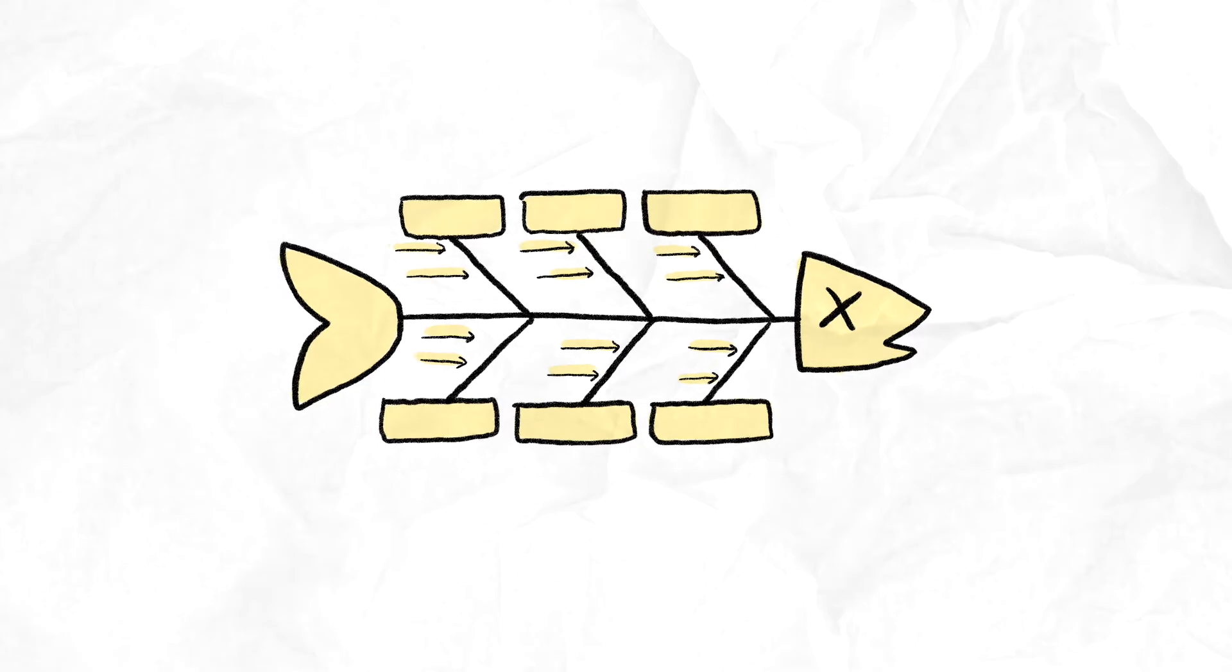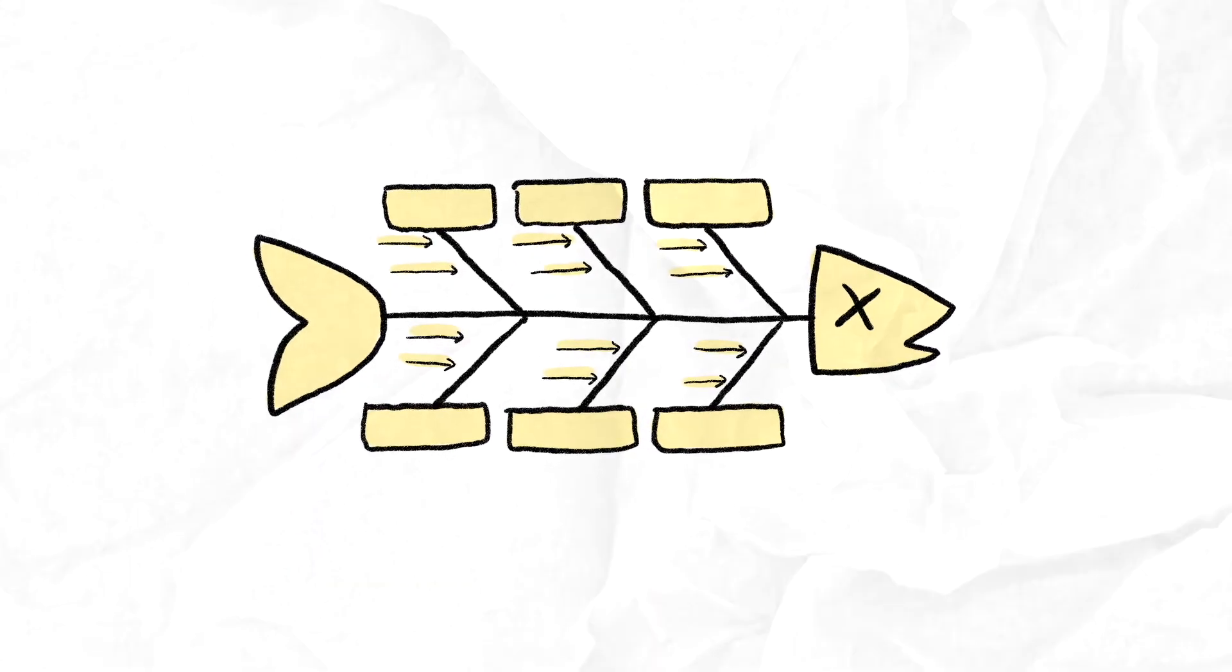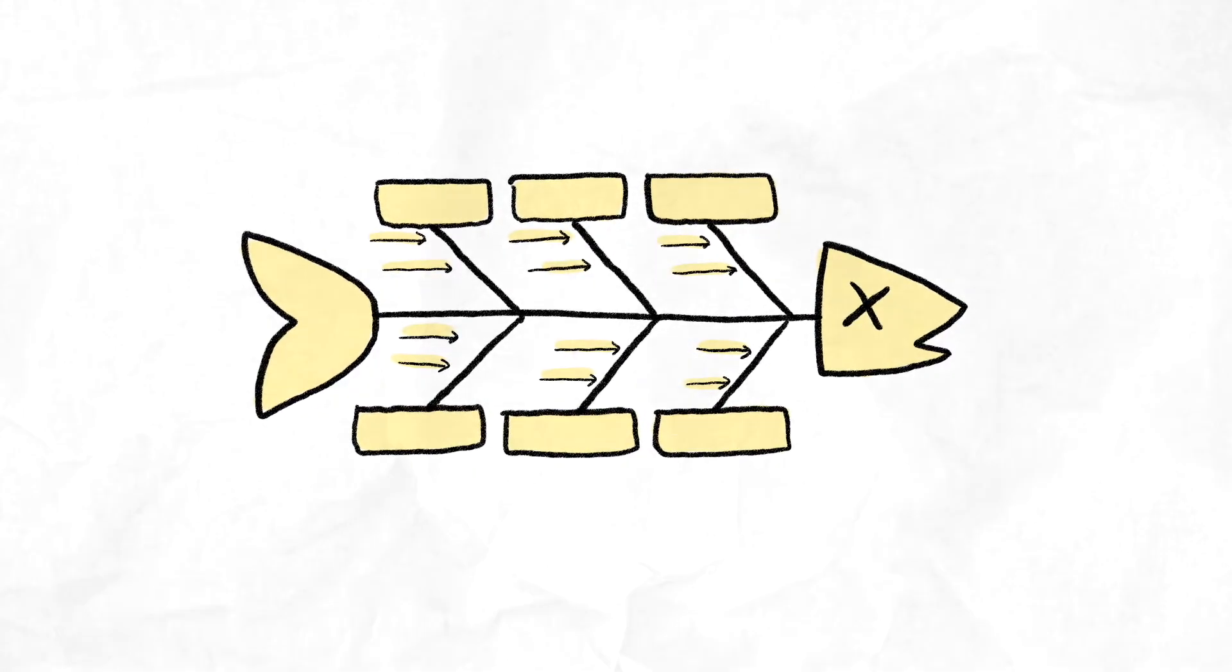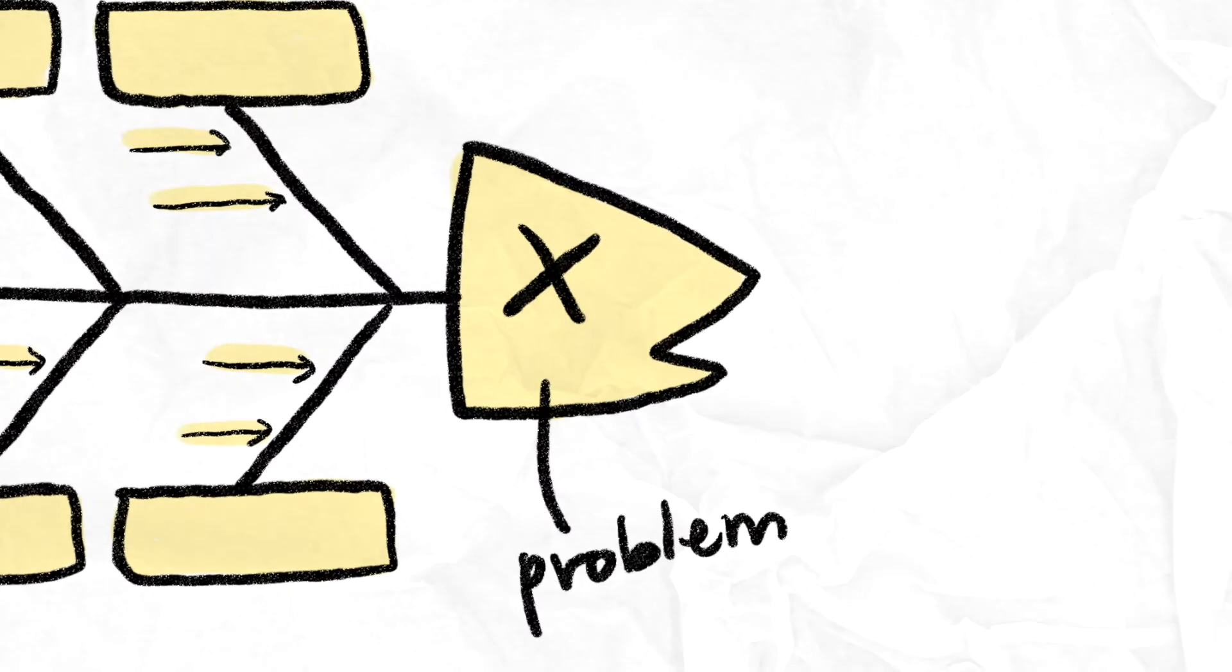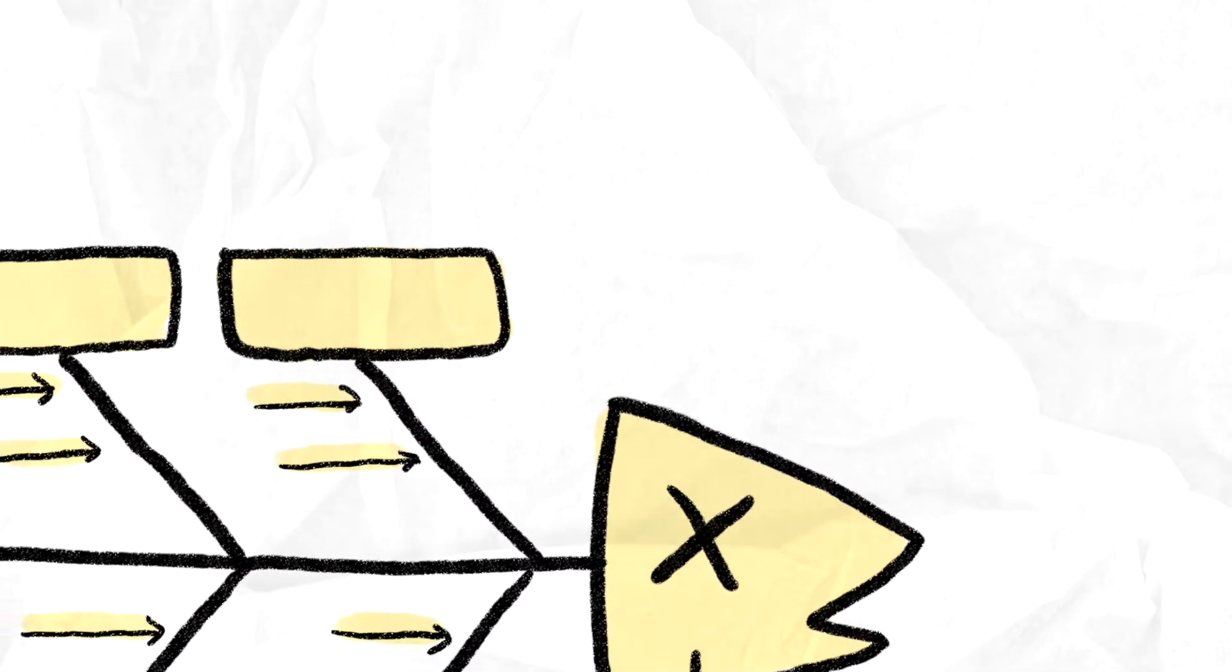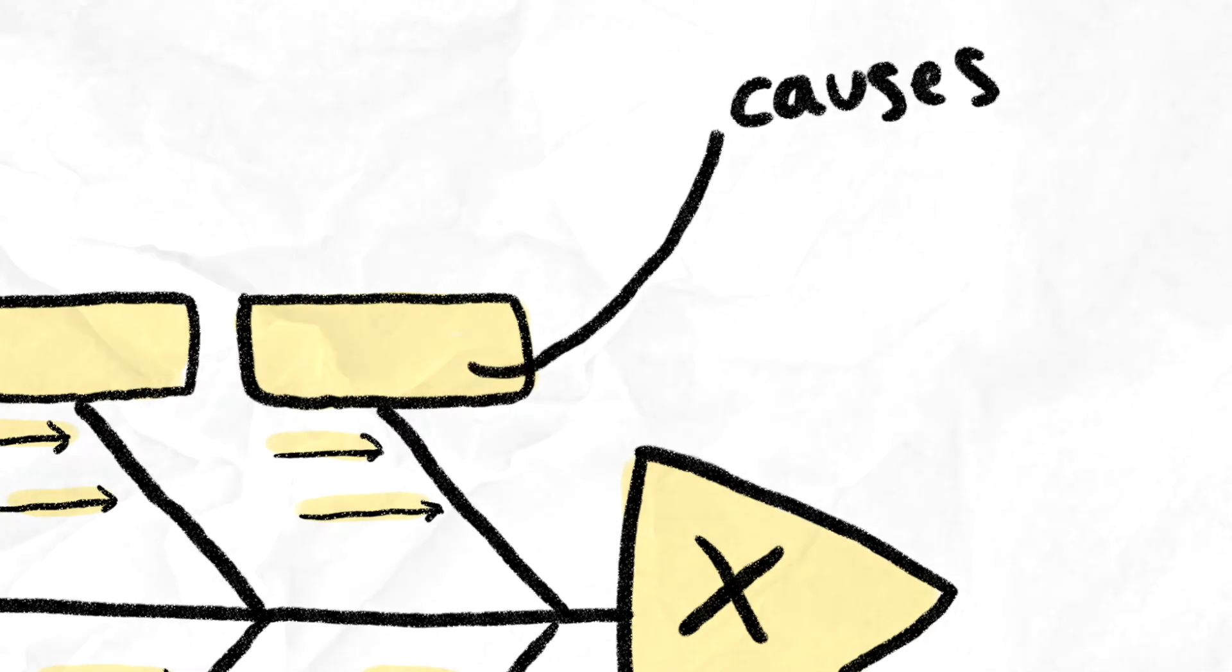A fishbone diagram can help your team to aggregate your understanding of a problem into a coherent visual. In a fishbone diagram, the problem is at the head and each of the major contributing causes make up the bones.